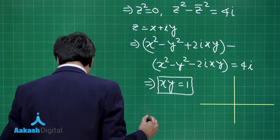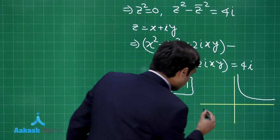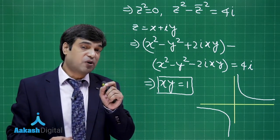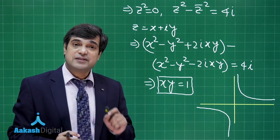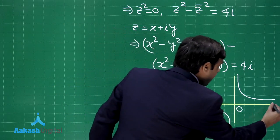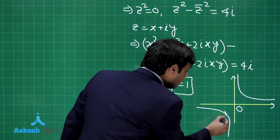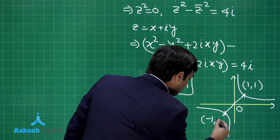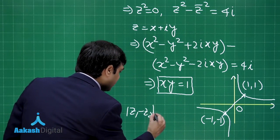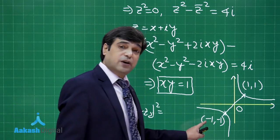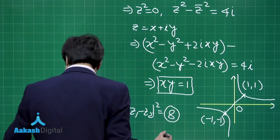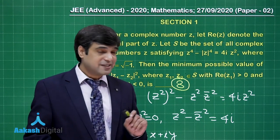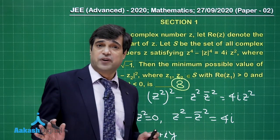This rectangular hyperbola lies in the first and third quadrants. The question asks for the minimum value of |z₁ - z₂|² where Re(z₁) is positive and Re(z₂) is negative, so z₁ and z₂ are on opposite branches. The minimum is achieved by joining the vertex points: (1,1) and (-1,-1). The required result is (1+1)² + (1+1)² = 8. The answer is 8.